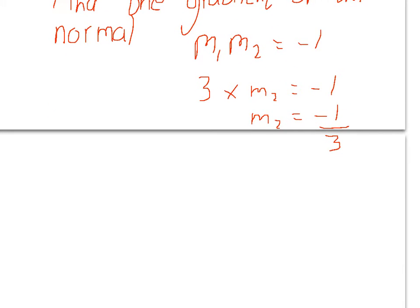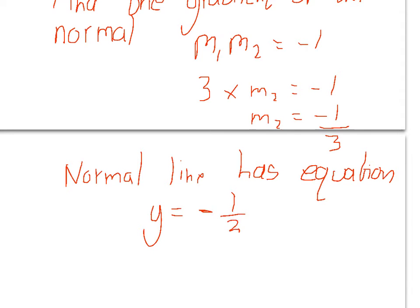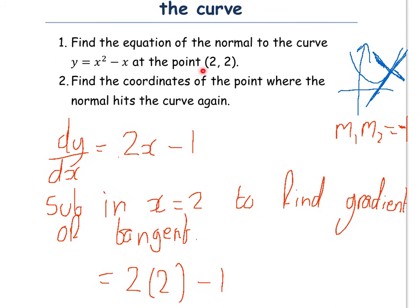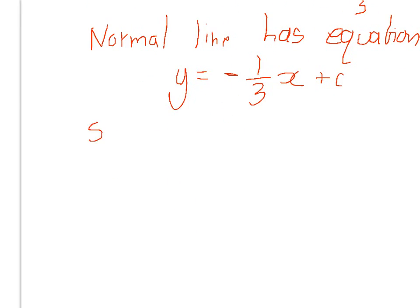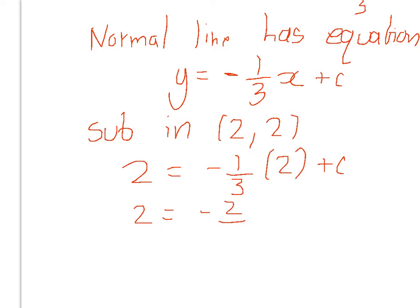This means now that our normal line has equation y equals minus 1 over 3x plus c. We're told that this passes through the point (2, 2). If we substitute that into the equation we've just found, we should be able to complete the equation for the normal. So our y coordinate is 2, so 2 equals minus 1 third times 2 plus c, because we want to find this constant c.